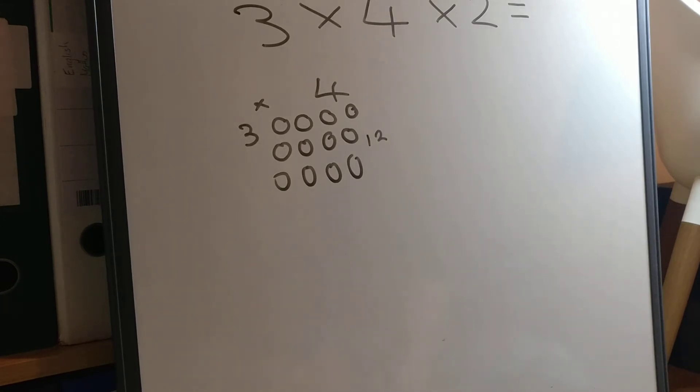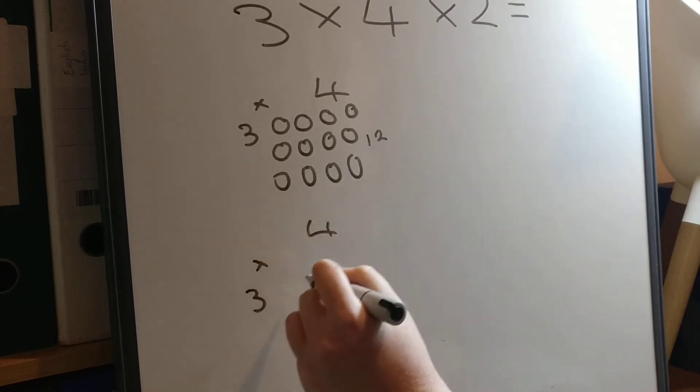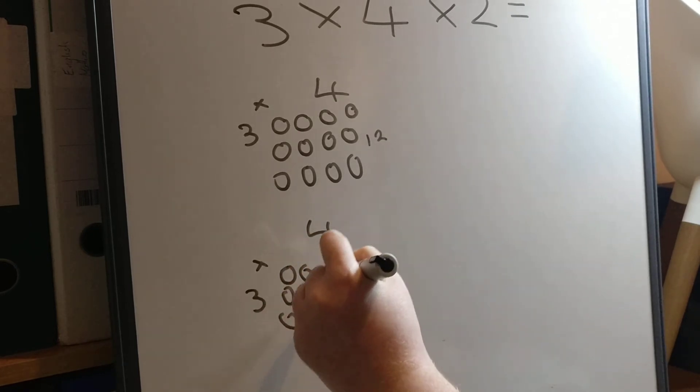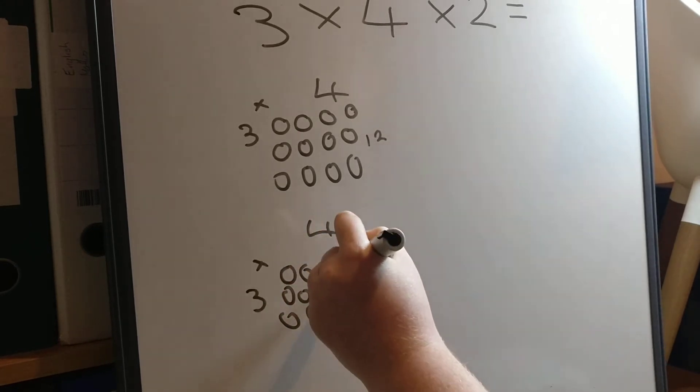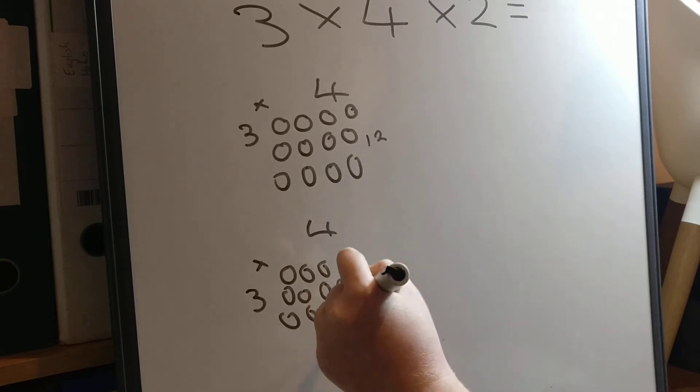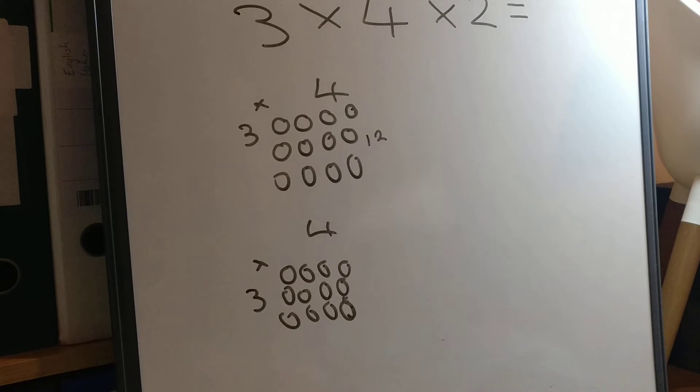So now let's look at the next bit of the question. So 3 times 4 times 2. So we need two lots of 3 times 4. I've got one lot so let's do the next lot. 3 times 4. One, two, three. And we know that the total number of counters here is exactly the same as this one because it's the same thing.